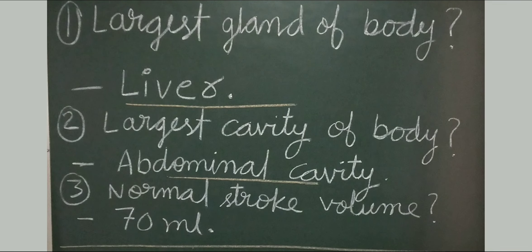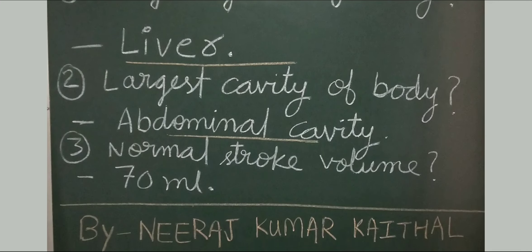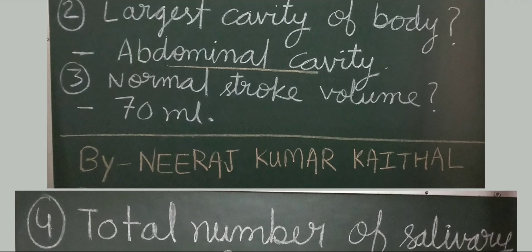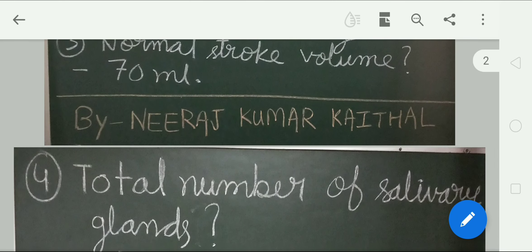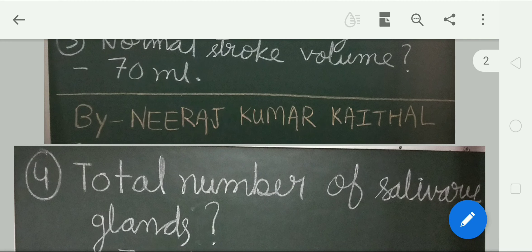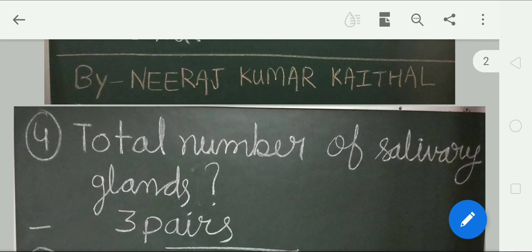Normal stroke volume: 70 ml. Stroke volume means the amount of blood forced into the aorta per contraction by the left ventricle. Question number 4: total number of salivary glands. The correct answer is six salivary glands, present as three pairs. The largest salivary gland is the parotid gland.